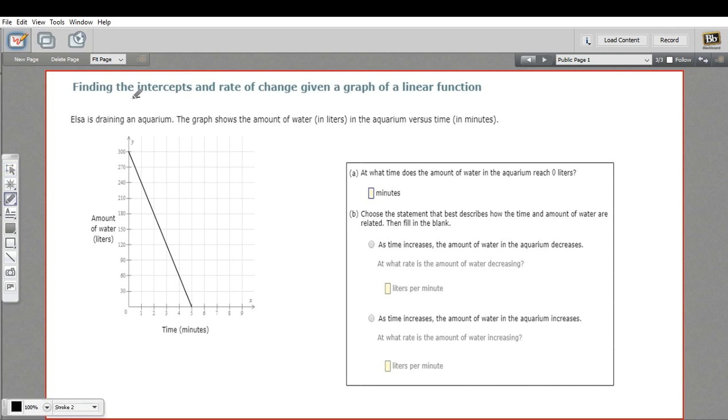In this problem, we're being asked to find the intercepts and the rate of change of a graph. And in this case, it's a graph of a linear function. That just means it's a line.